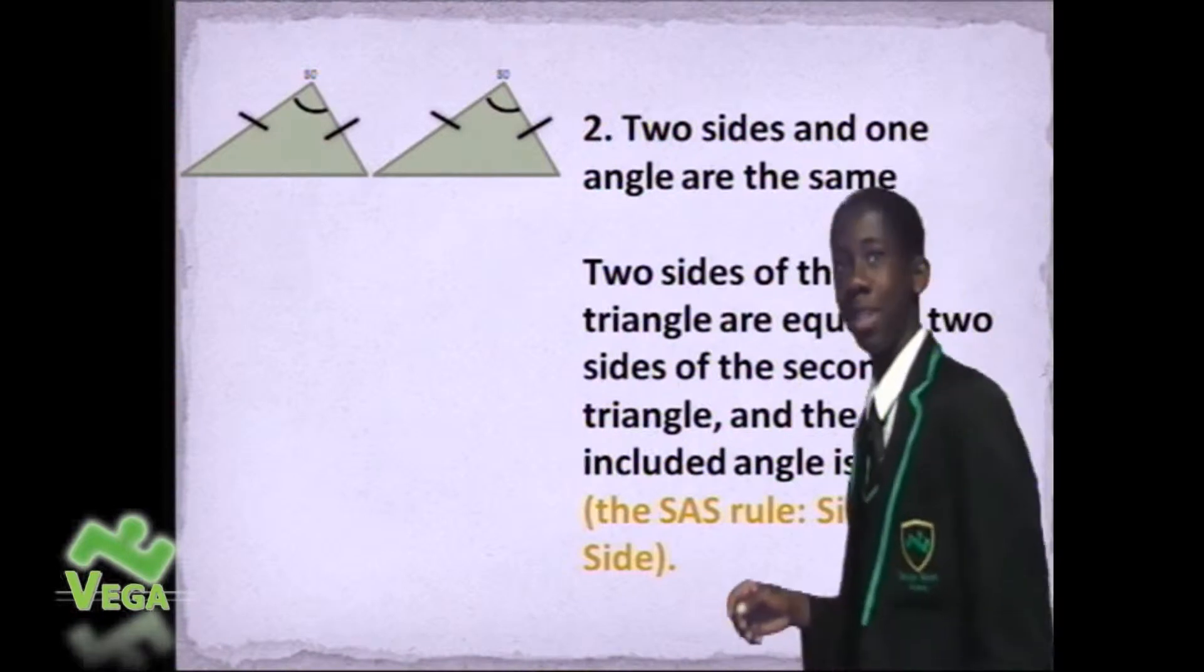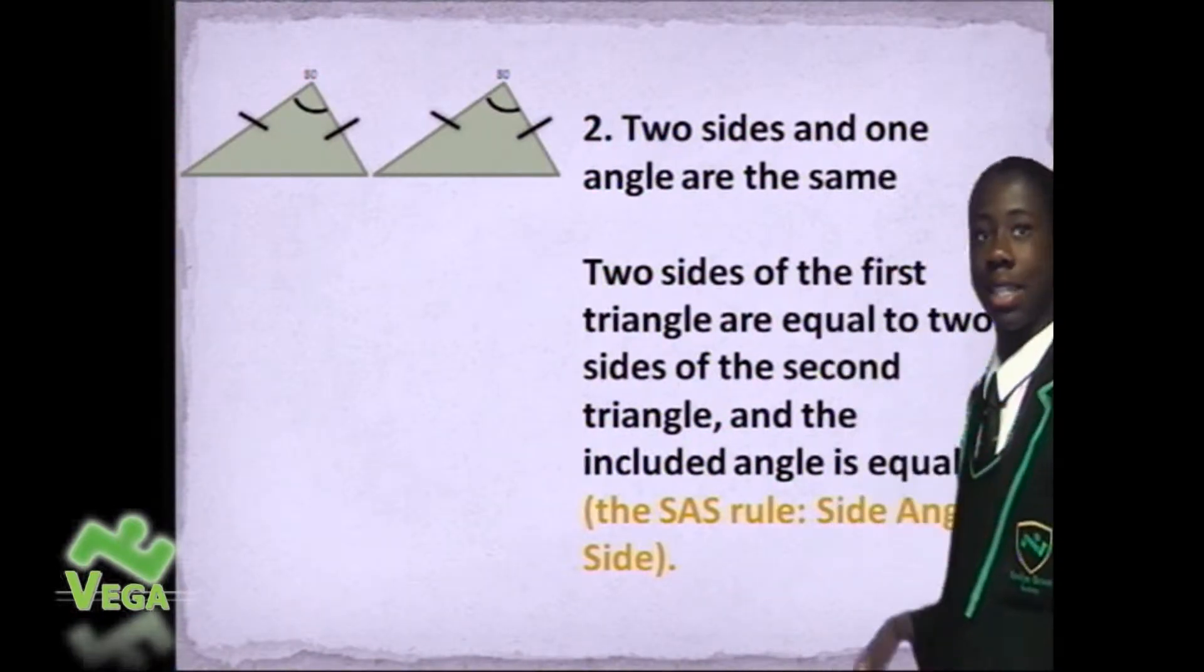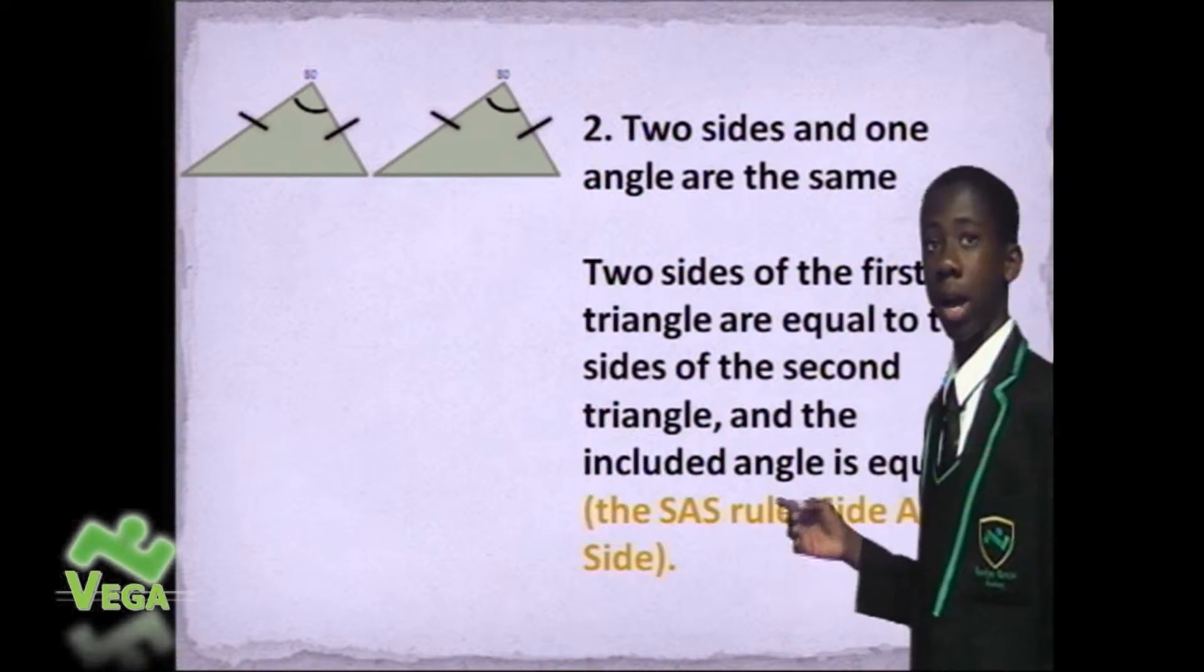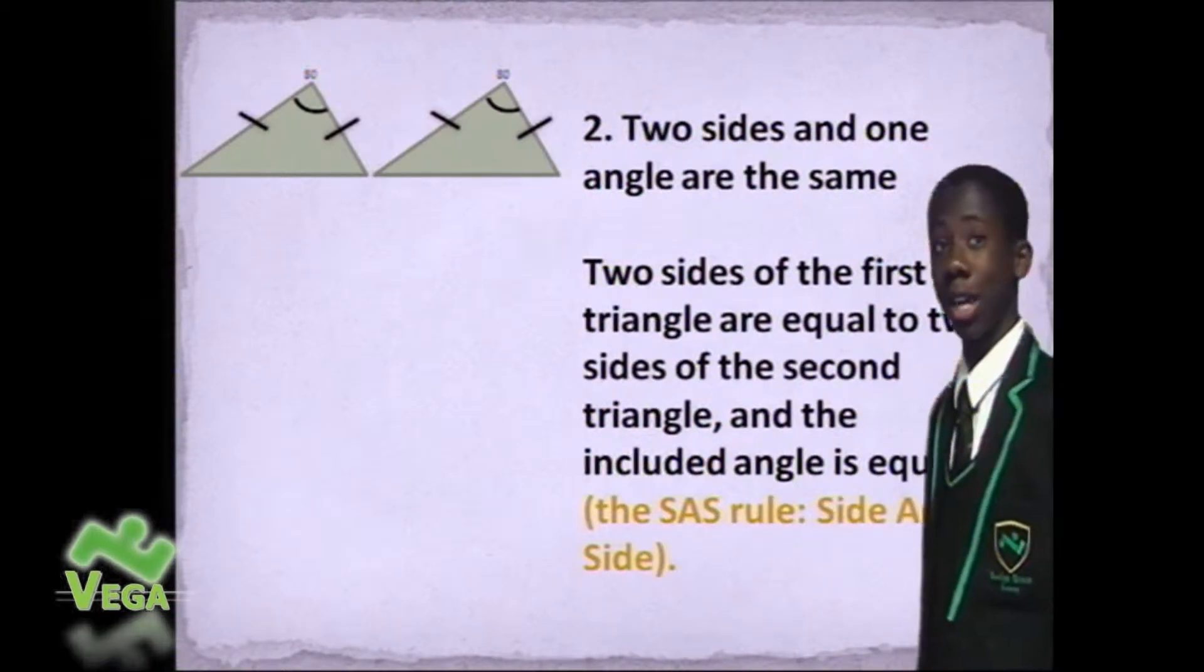The second rule of congruence is that the two sides and the angles are the same, but the angle has to be between the two sides to make them congruent.